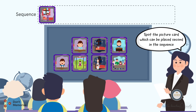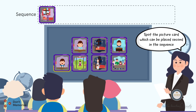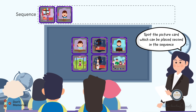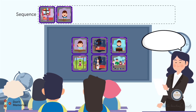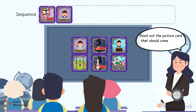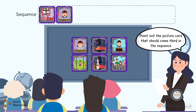Following this, ask the students to spot the picture card which can be placed second in the sequence. Students will possibly point at the picture card of the girl wearing the school uniform at home and having milk and biscuits. Align the mentioned picture card second in the sequence. Ask the students to point out the picture card that should come third in the sequence. Students will possibly point to the picture card of the girl sitting in the classroom.